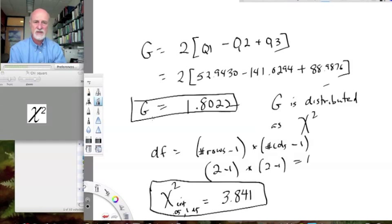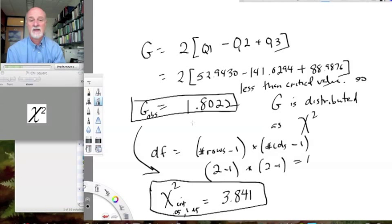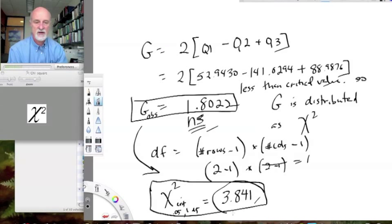And then we compare our g, our observed g, to this critical value. Now, because our g is less than this critical value, so it is not significant. Large g means more significant. Small g means less significant. And this is our critical value that we want to compare our observed g to. And it's not significant.